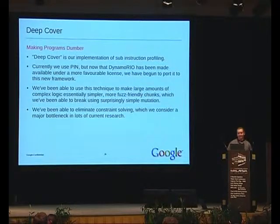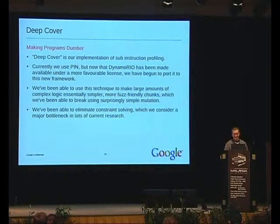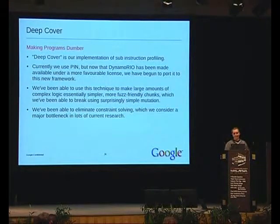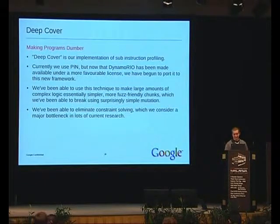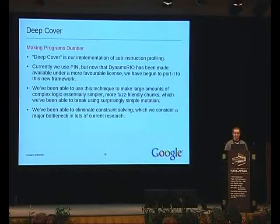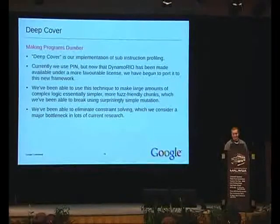We've been able to break some surprisingly complex logic using these simple mutation techniques and some feedback from our program. I've eliminated constraint solving from my fuzzing, which I've considered a major bottleneck for a while. In lots of current research that plugs constraint solvers into fuzzing, I found that this is a bottleneck holding them back from really finding some excellent results.